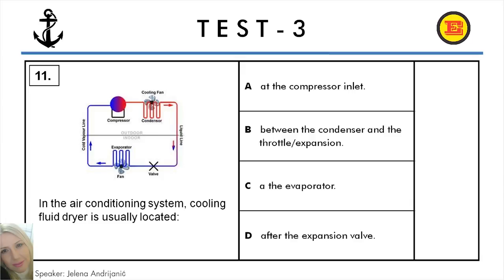Question number 11. In the air conditioning system, the cooling fluid dryer is usually located: A: At the compressor inlet, B: Between the condenser and the throttle or expansion valve, C: At the evaporator, D: After the expansion valve. And the correct answer is B: Between the condenser and the throttle or expansion.